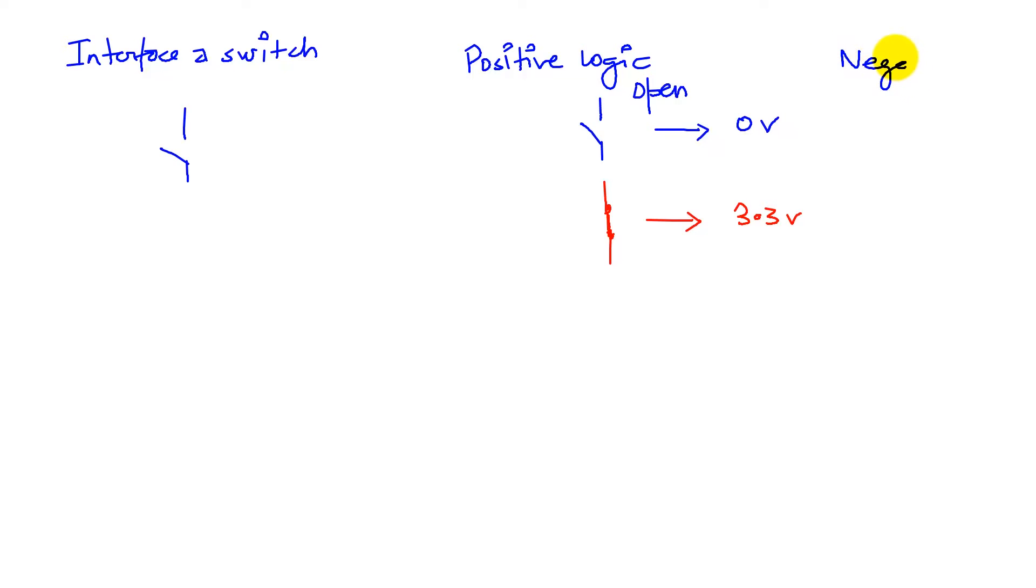Negative logic, by the same measure, would be exactly the opposite. That is, an open will get me 3.3 volts and a close will get me zero volts. But in this project, we're going to look at a positive logic interface.